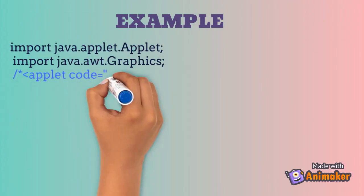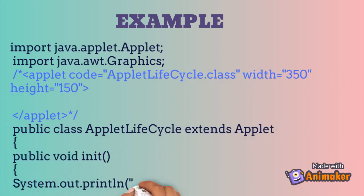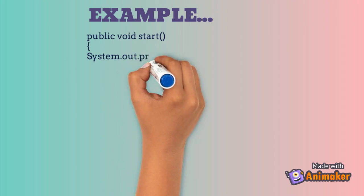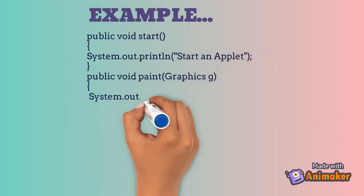We can see an example using an Applet. There are two packages imported: one for the Applet class and second for the Graphics class. The HTML code, as commented, is used for Applet generation. The class name extends the Applet class. The init method is called when Applet is initialized. Start method is called when Applet is started. The paint method is called, which shows a welcome Applet message on the Applet window.